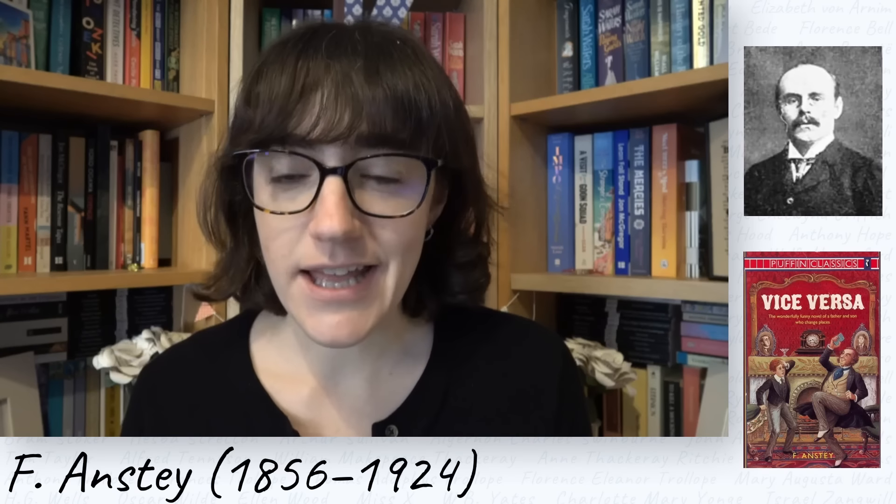F. Anstey was the pen name of Thomas Anstey Guthrie, born in 1856 and died in 1924 — a Victorian comic writer from London who also worked as a lawyer. I haven't yet read anything by him, but he's best known for Vice Versa, or A Lesson to Fathers from 1882, about what happens when a father and son swap bodies — essentially the first Freaky Friday-style story ever written. He also wrote a serious novel called The Giant's Robe, which George Gissing scathingly dismissed, but I'd like to start with Vice Versa.